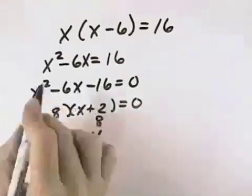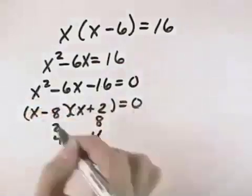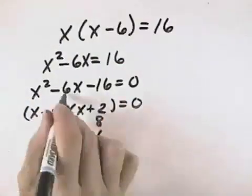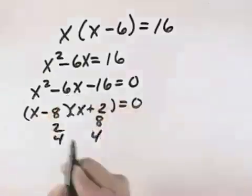That tells me I should change the signs because I want a negative 6X. So I can see now with a negative 8X on the inside and a positive 2X on the outside, that gives me the negative 6X I was looking for.